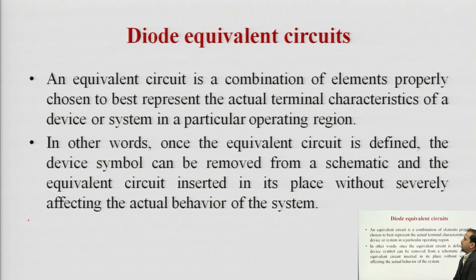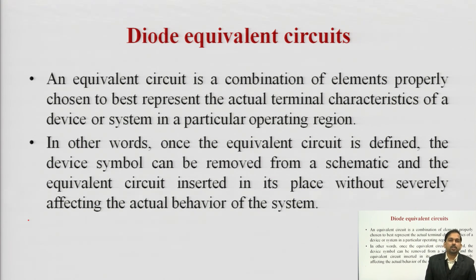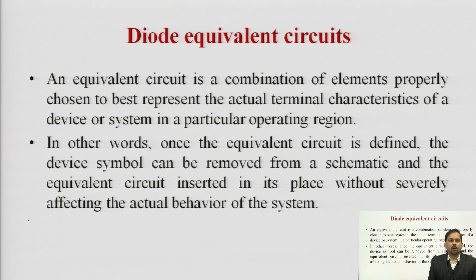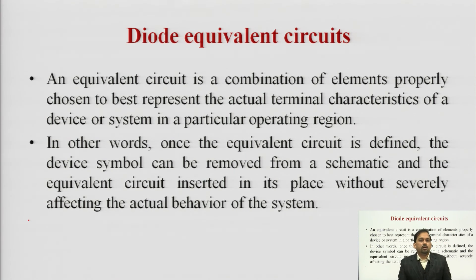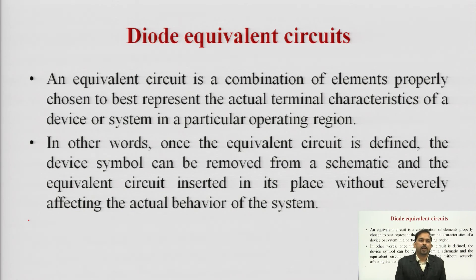First is the diode equivalent circuit. Why are equivalent circuits required? An equivalent circuit is basically a combination of elements properly selected to best suit the terminal characteristics. For a p-n junction diode we want the equivalent circuit so that we can replace it into the desired circuit. In other words, the equivalent circuit is defined as a device symbol that can be removed from a system and the equivalent circuit inserted in place without affecting the actual behavior of the system.